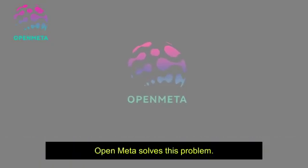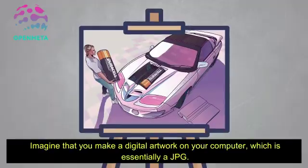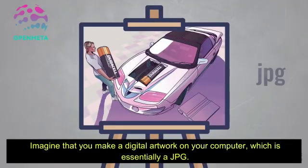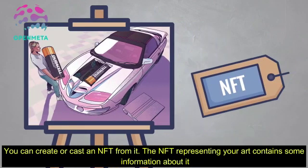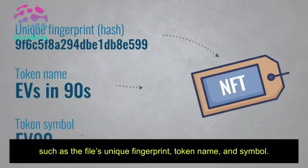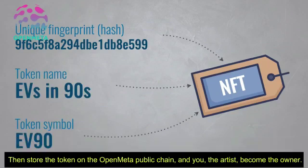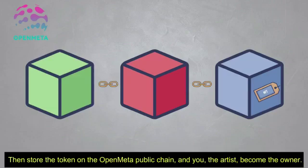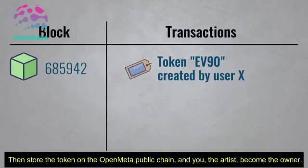Open Meta solves this problem. Imagine you make a digital artwork on your computer, which is essentially a JPG. You can create or mint an NFT from it. The NFT representing your art contains some information about it, such as the file's unique fingerprint, token name, and symbol. You then store the token on the Open Meta public chain, and you — the artist — become the owner.